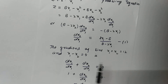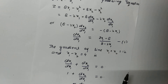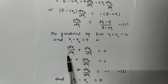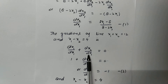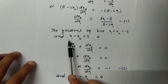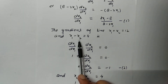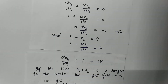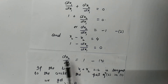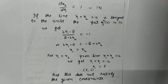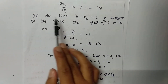Then I find the gradient of the constraints. For constraint 1, x1 + x2 = 12: differentiating gives dx2/dx1 = −1. For constraint 2, x1 − x2 = 4: differentiating gives dx2/dx1 = 1.